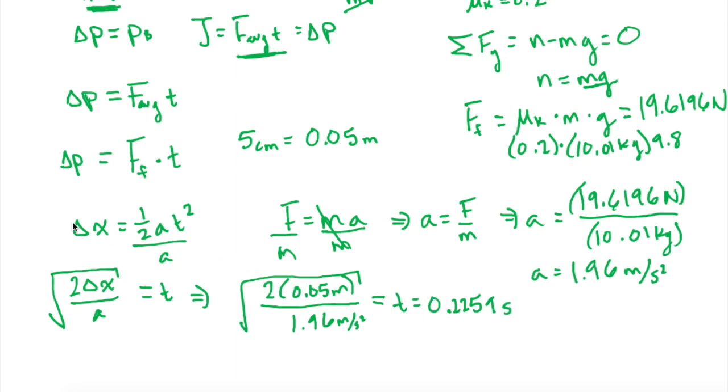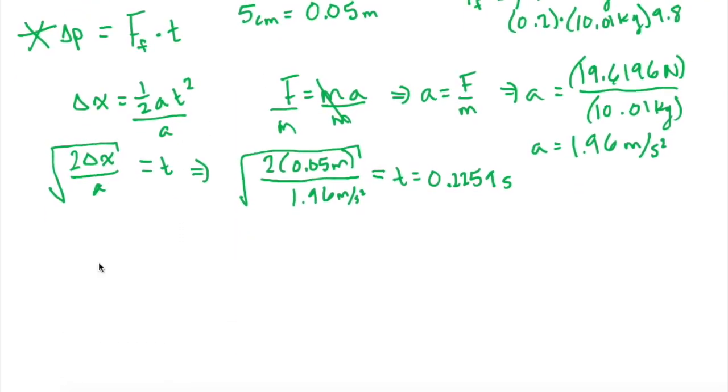All right. So now we have everything for what we want up here. We have our friction force, which we solved for, and we just solved for time. So now we can solve for V, for the bullet. So P for the bullet is the mass times the velocity, which we said is equal to the friction force times the time. So if we divide by m, the velocity of the bullet will equal the friction force times the time divided by the mass of the bullet.